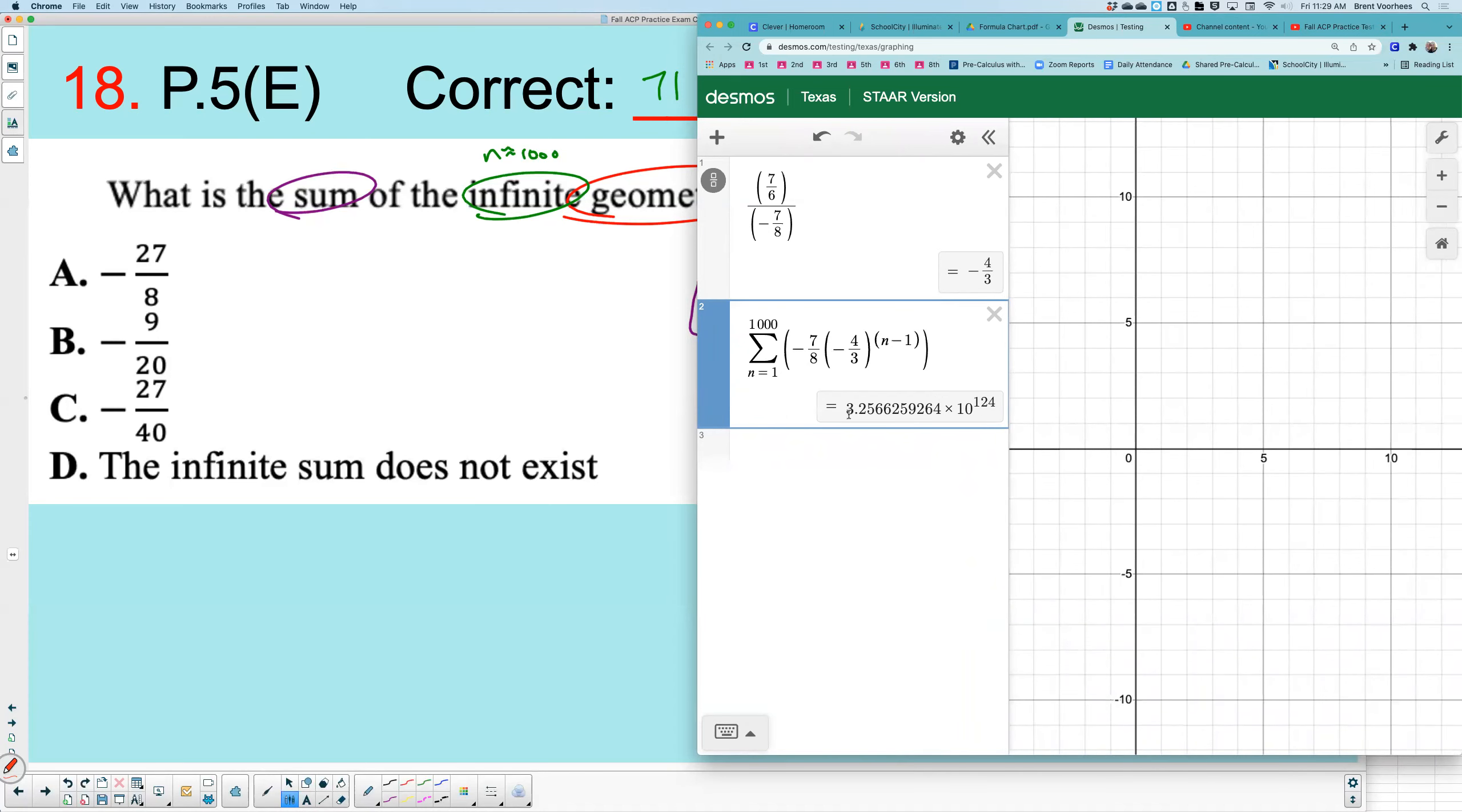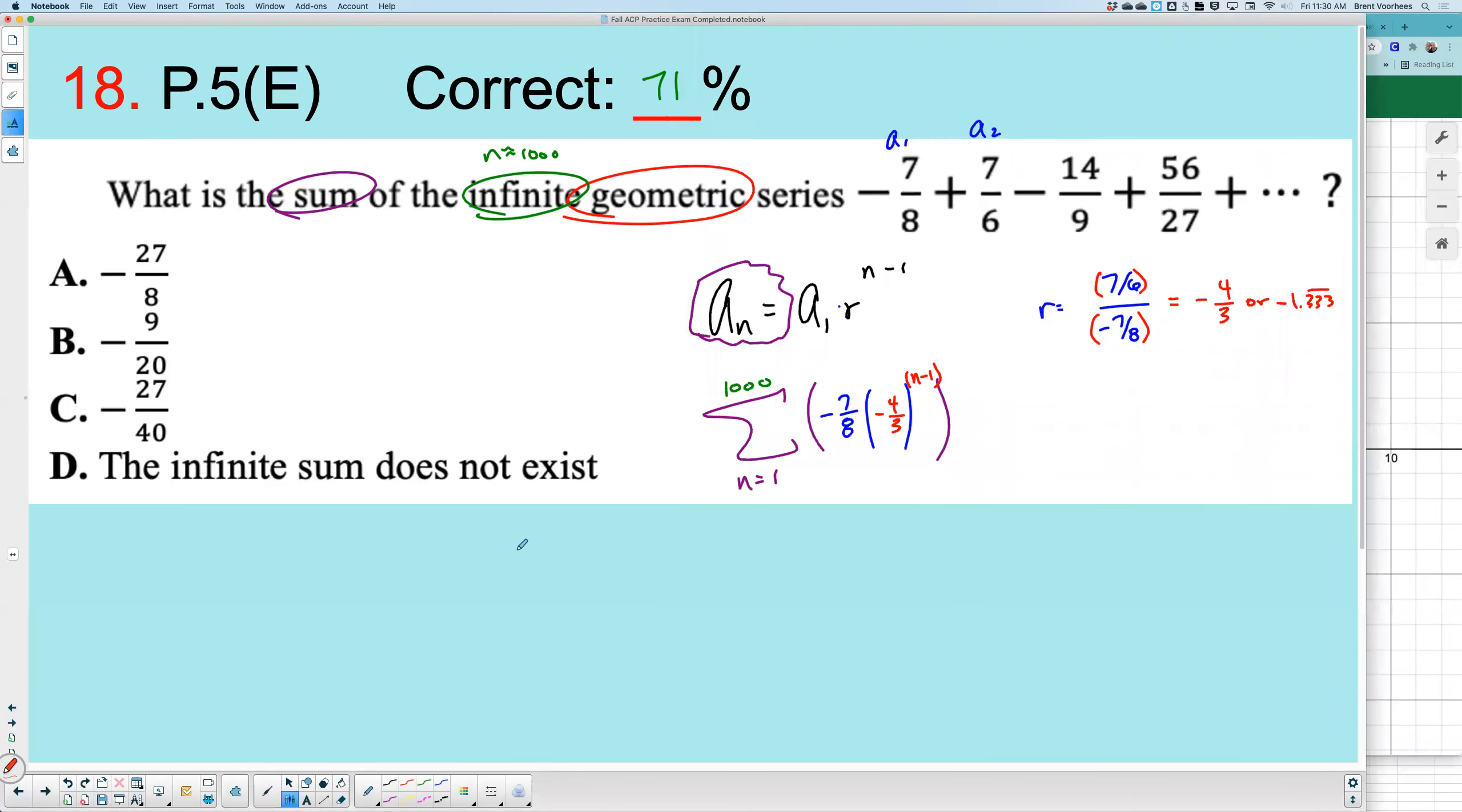And you can see this number is 3 point all this times 10 to—it's 3 with basically 124 zeros after it. Just an extremely large number. This is going to infinity, which is not a real number. For that reason, you would say the infinite sum does not exist. The answer choice is D.